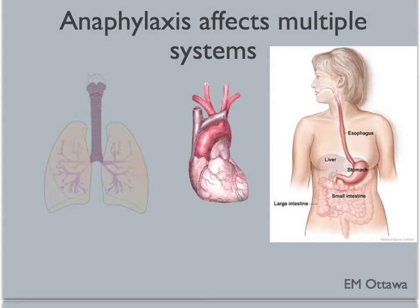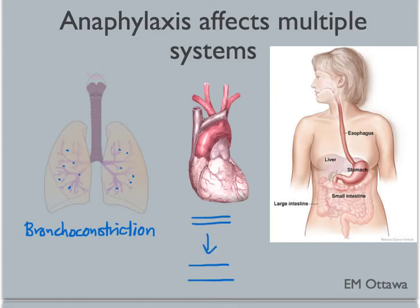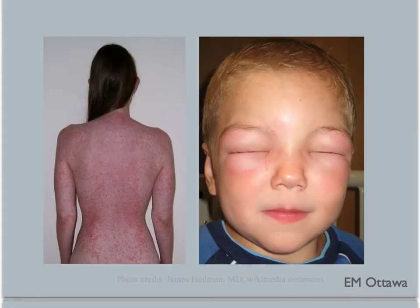In the lungs, these mediators cause bronchoconstriction and mucus production. In the circulatory system, they cause vasodilation. In the gut, they can cause diarrhea and cramping. In the skin, they cause swelling. It can be superficial, such as hives, or it can be deep, such as angioedema.